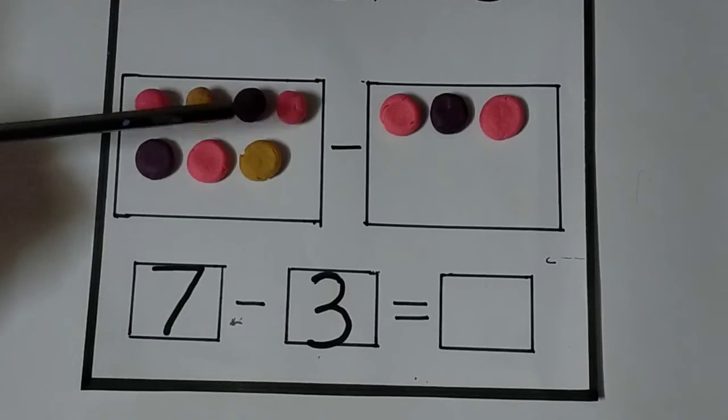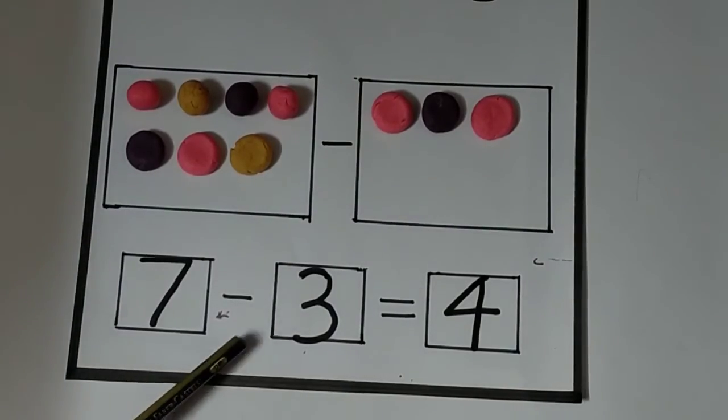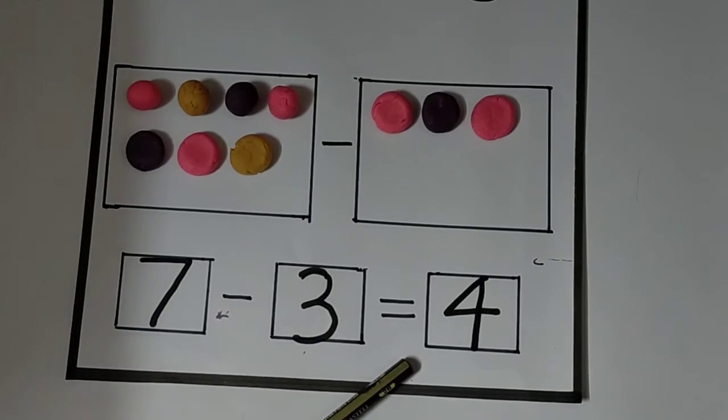Okay, now, how many left? One, two, three, four. Okay. Now, seven minus three equals to four.